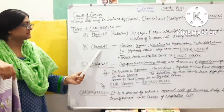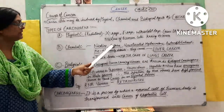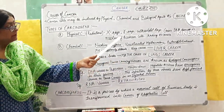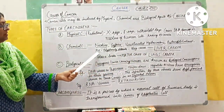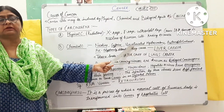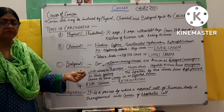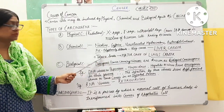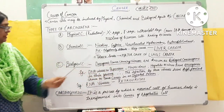The second type is chemical carcinogens. These chemicals include nicotine, caffeine from tea and coffee, unsaturated hydrocarbons, automobile exhaust, and pollution. Polyphenyl carbohydrates cause liver cancer, and the liver is a very important part of the human body. A major cause of deaths worldwide is tobacco smoking and tobacco chewing, which are the primary causes of lung cancer.